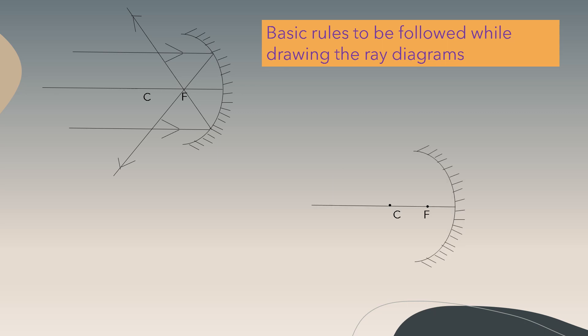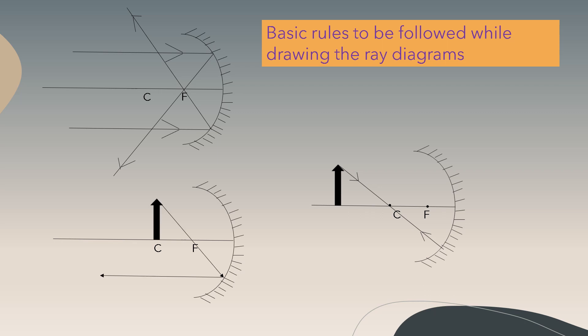A ray passing through the center of curvature will emerge without deviation. A ray passing through the focus will become parallel to the principal axis.